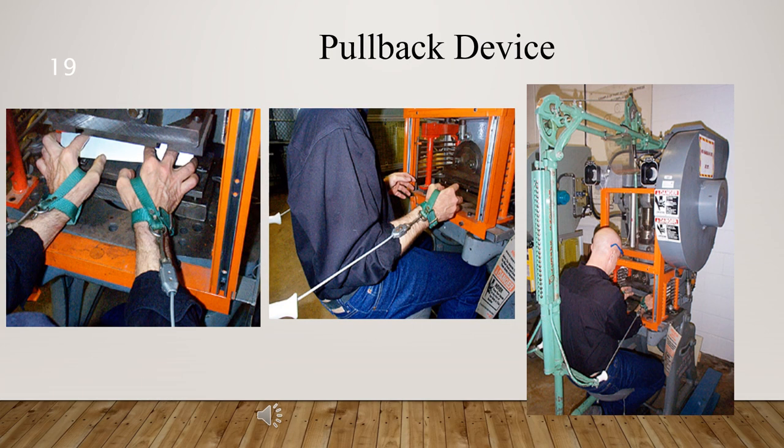In this part, we will learn about the pullback type safety device. Pullbacks or pullouts are used as safeguarding devices on both full and part revolution power presses. They are similar to restraints, but pullbacks are designed to pull the operator's hands away from the area of the closing dies at the point of operation during each stroke of the power press.